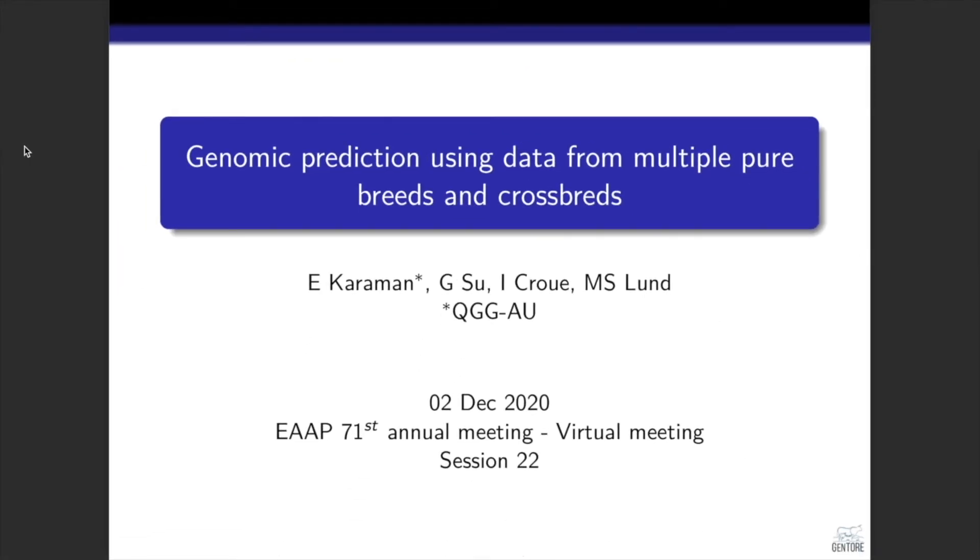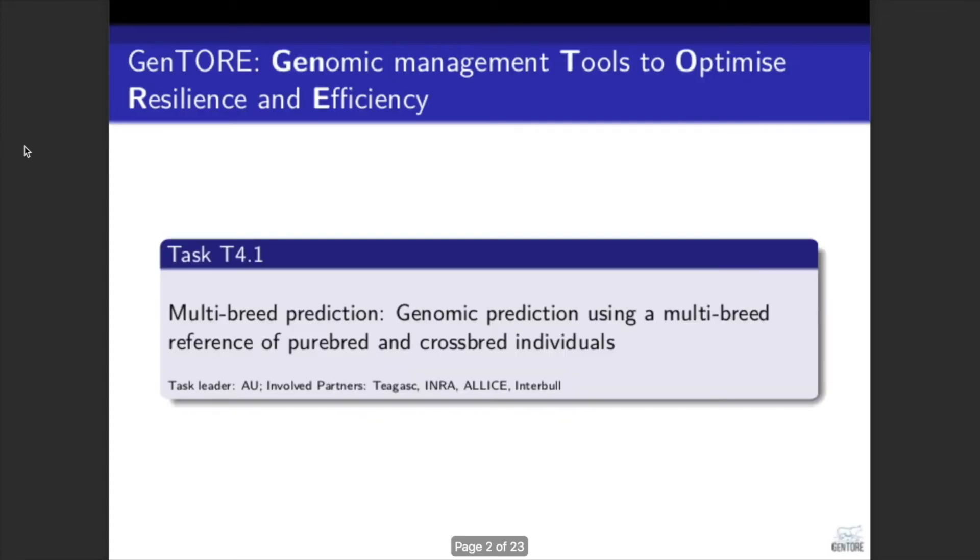Hi everyone, this is Emre Karaman. I'm a postdoc at the Center for Quantitative Genetics and Genomics at Aarhus University in Denmark, and I will share some results from GEMTOR Project Work Package 4, where we focused on multi-breed genomic prediction.